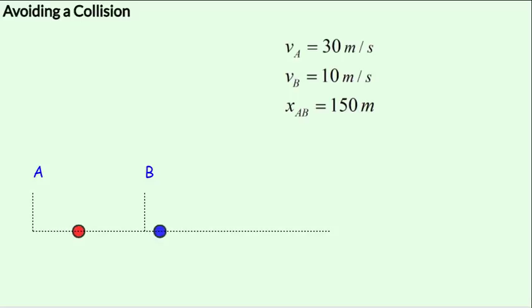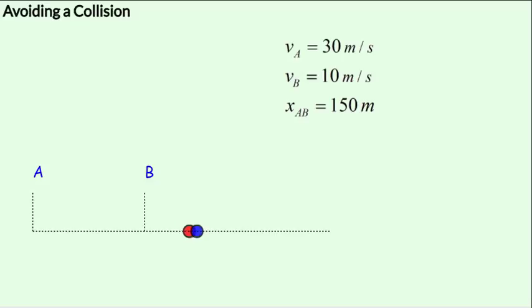Since the red ball moves with a higher speed, it will ultimately catch up with the blue ball in some amount of time. So there would be a collision between the red ball and the blue ball, which in this case happens to be at point C.